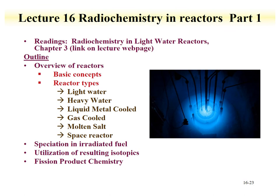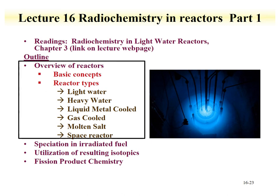That completes lecture part one, where we discussed the types and concepts of reactors as part of the lecture on radiochemistry in reactors. When you've completed this part, please go on to lecture two, where we'll talk about speciation in irradiated fuel, utilization of the resulting isotopes, and an overview of fission product chemistry in reactor systems.